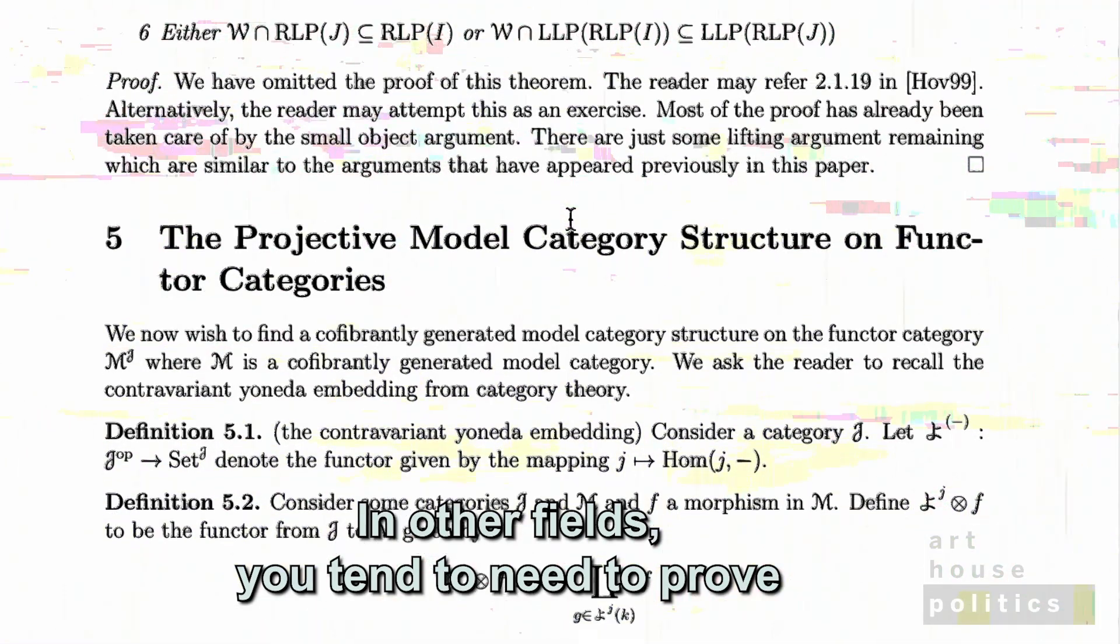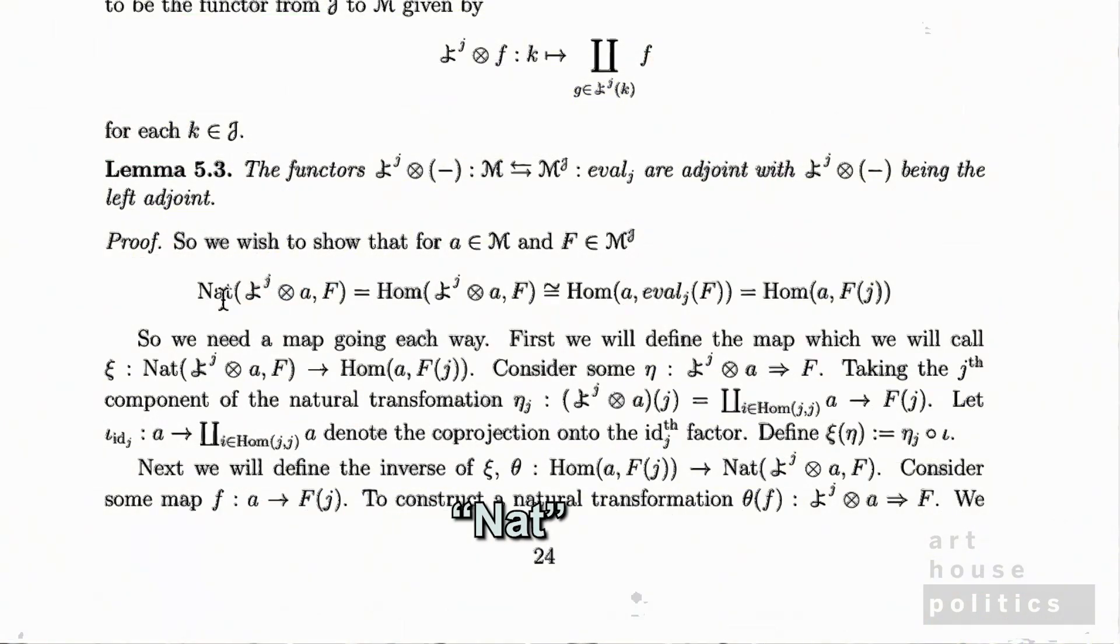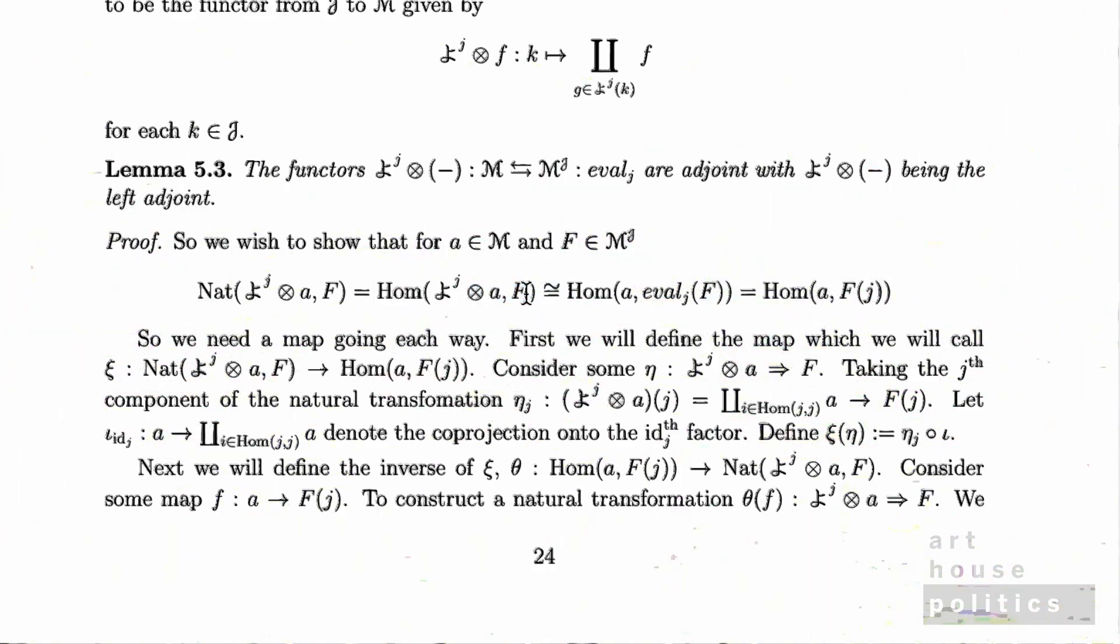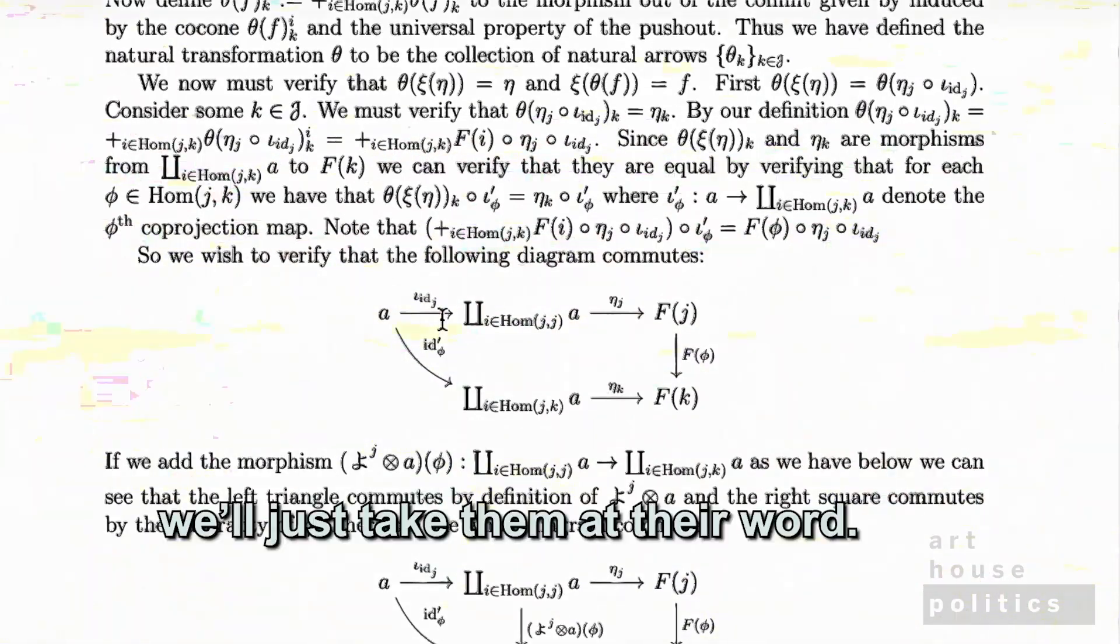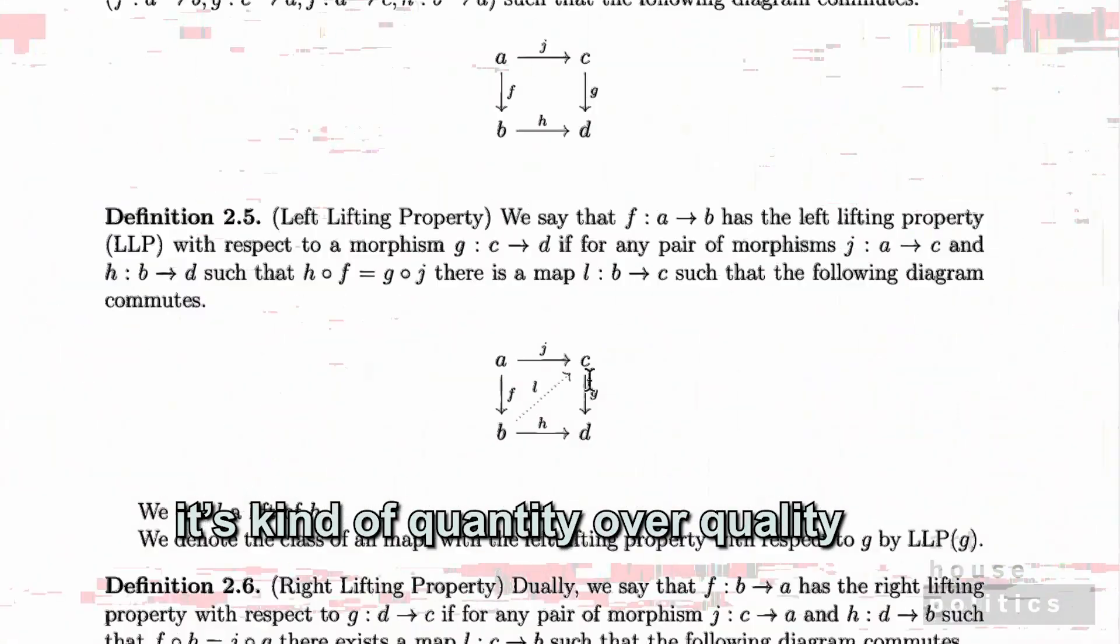In other fields, you tend to need to prove something you're saying. If what you're trying to say is NAT alien symbols equals HOM alien symbols, I guess you don't need proof. We'll just take them at their word, and I will say, it's kind of quantity over quality.